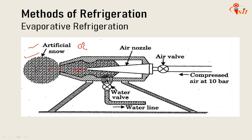Evaporative condensers are often used in connection with air conditioners. The evaporation of water helps reduce the quantity of water required for cooling in the water condenser used in the refrigeration plant.